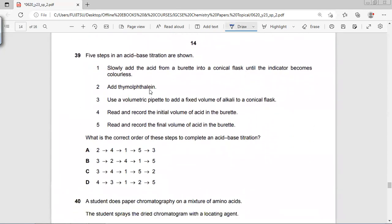In an acid-base titration, five steps are shown. First of all, first step is to use a volumetric pipette to add a fixed volume of alkali or acid, whichever is the unknown titrant, that you put in the conical flask.